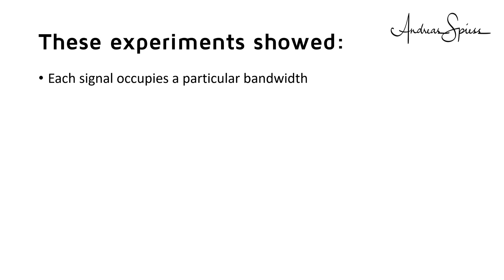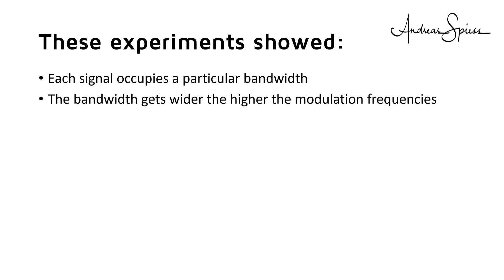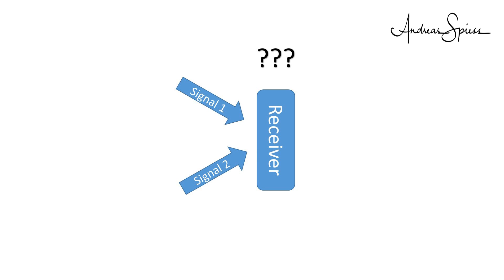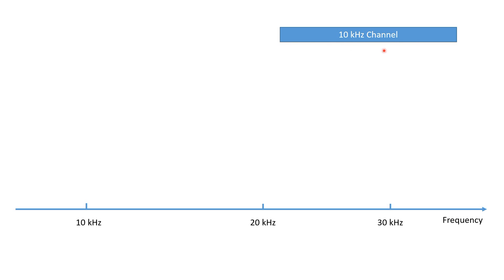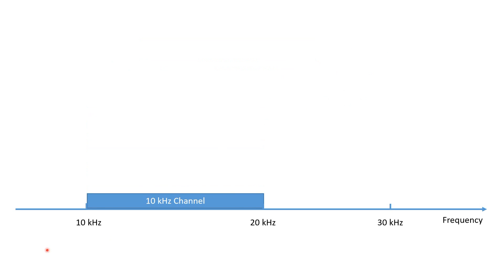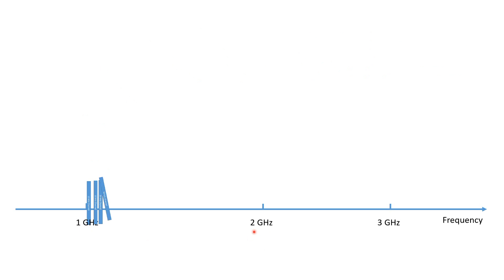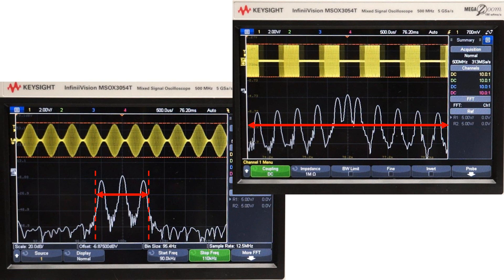These experiments showed that each signal occupies a particular bandwidth. The bandwidth gets bigger the higher the modulation frequencies, or the faster the speed of the digital signal. This is a physical law and can only be optimized with some tricks — it cannot be avoided entirely. Why is bandwidth so significant? First, because the receiver can only listen to one device on a particular frequency at the same time. For example, if our signal needs a bandwidth of 10 kHz, we can only place one channel between 10 and 20 kHz, but we can place 100,000 channels between 1 and 2 GHz. Second, higher bandwidth reduces the available link budget and therefore reduces the maximum range of our devices.